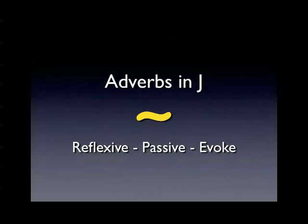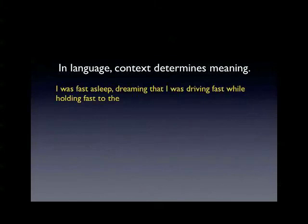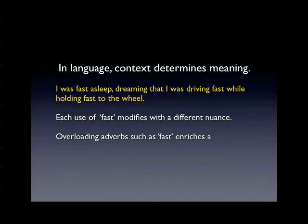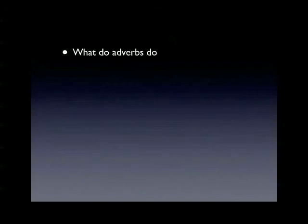The reason it's got a number of different things that it does is because that's the way adverbs are. In language, adverbs determine their meaning depending on the context, the words they're adapting or modifying. For instance, fast asleep means something different than driving fast, and it makes a difference if you're holding fast to something. Fast, what it means depends on what it's modifying. The English language uses this to make a very rich language, and J uses this technique as well with its adverbs to get a very rich, flexible approach.